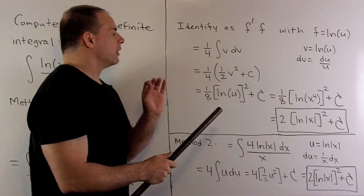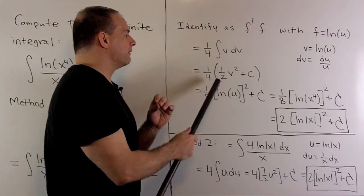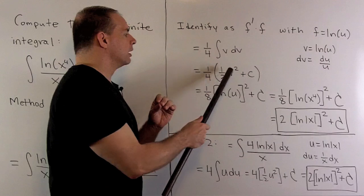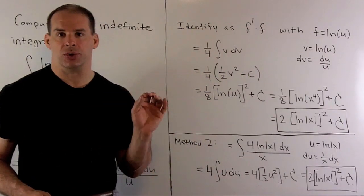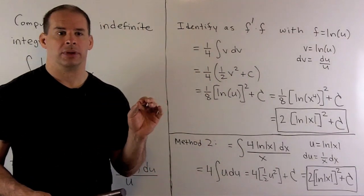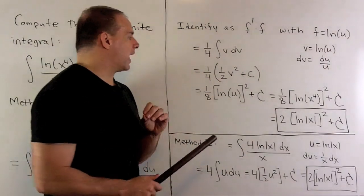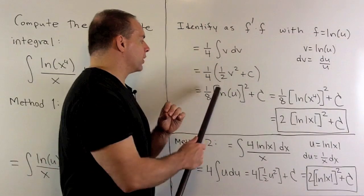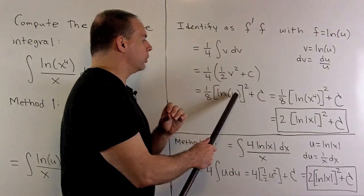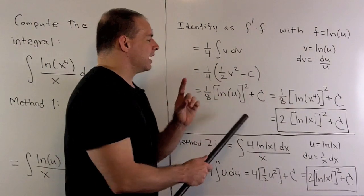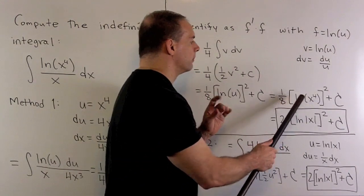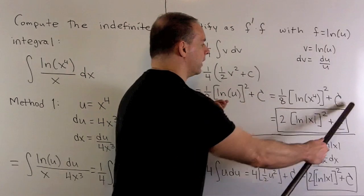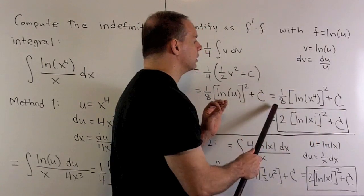That'll go to one half v squared, and then we can start back substituting. So v goes to natural log of u, and then u goes to x to the fourth, and then we're finished here.